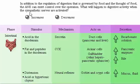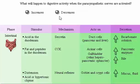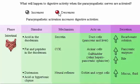In addition to the regulation of digestion governed by food and the thought of food, the ANS can exert control over the operation. When the sympathetic nerves are activated, digestive activity decreases. Parasympathetic activation increases digestive activities. The simple functions of the parasympathetic nervous system are to rest and digest.